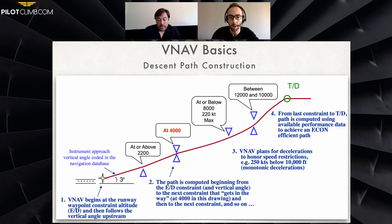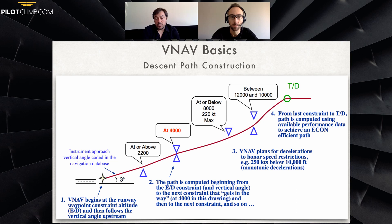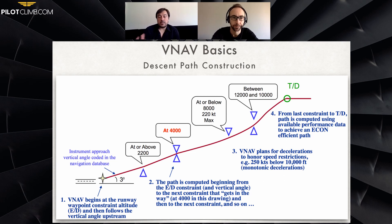The next constraint point is at or below 10,000 feet with a 250-knot maximum speed — you'll see the triangle pointing down — and the VNAV plans for deceleration to meet speed restrictions, typically 250 knots below 10,000 feet unless ATC instructs otherwise. The next point has a window between 12,000 and 10,000 feet. The last constraint leading to the top of descent path is computed using available performance data to achieve an econ-efficient path all the way down to that constraint.